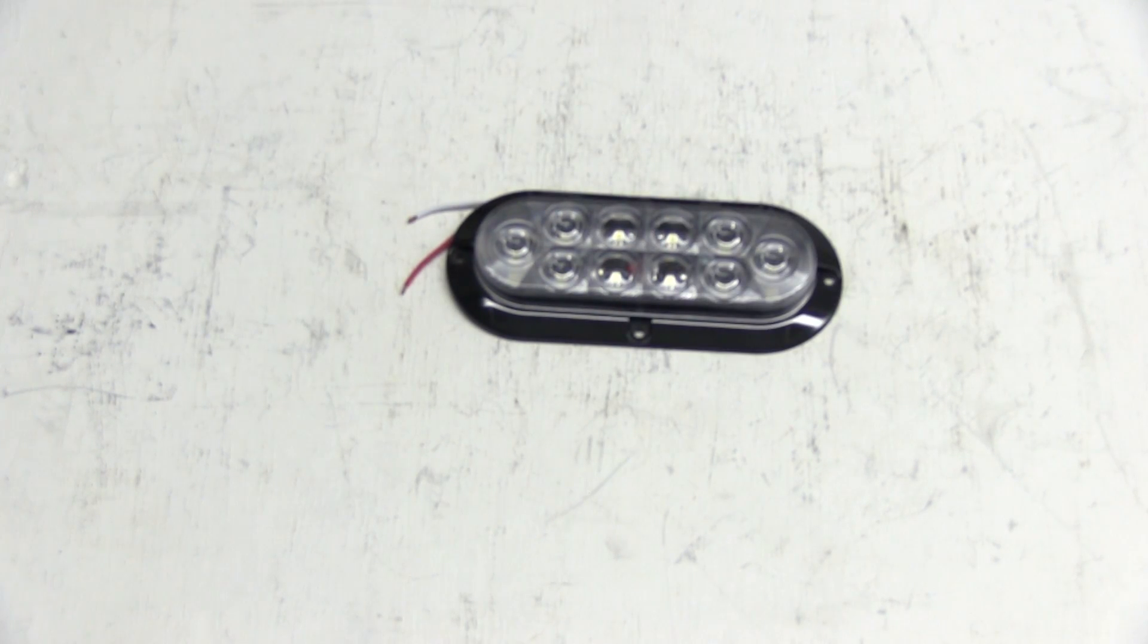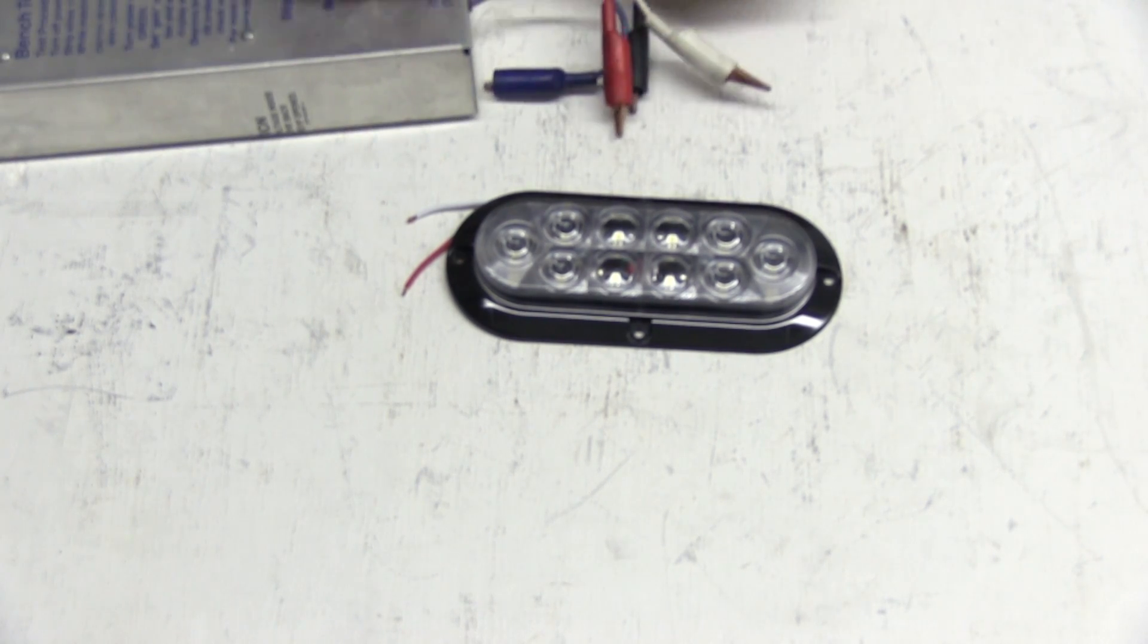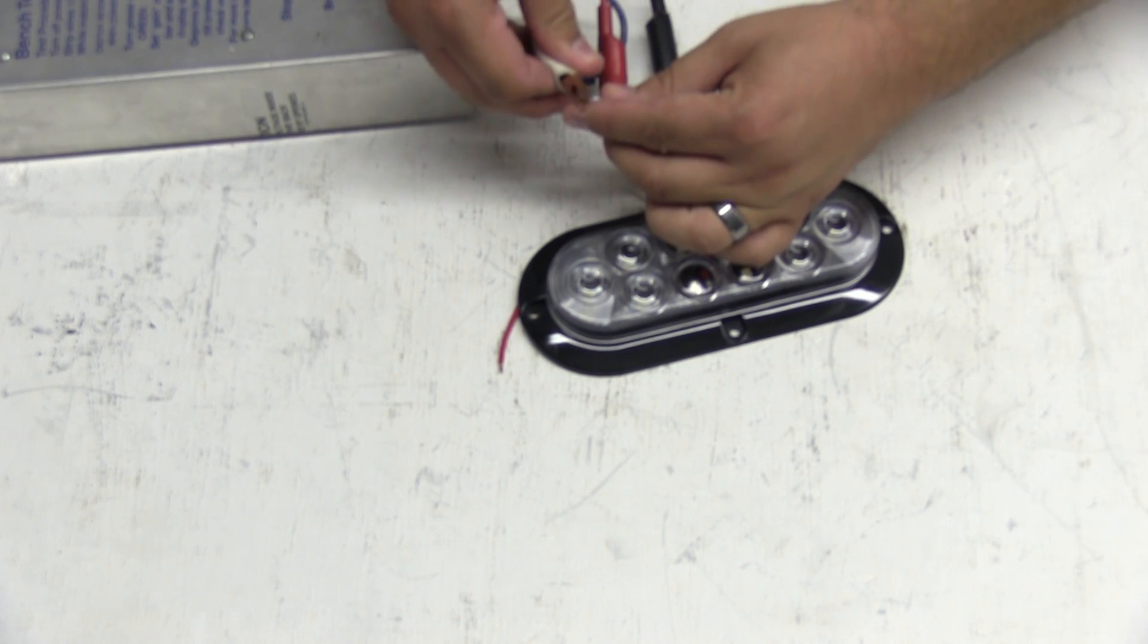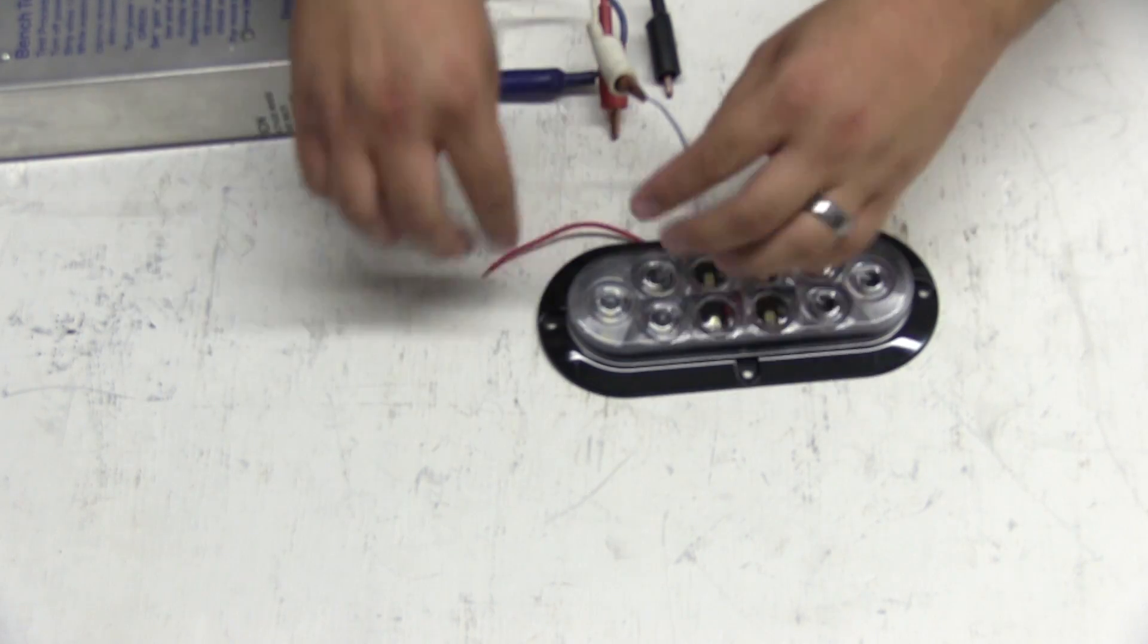Next we'll hook the light up to a power supply so you can see how it looks. Connect the white wire to our ground and the red wire to our power.